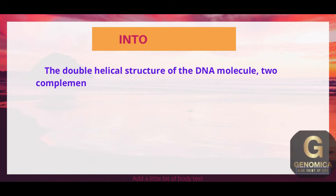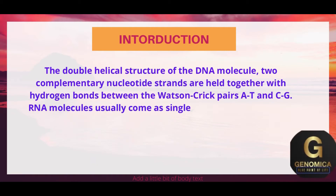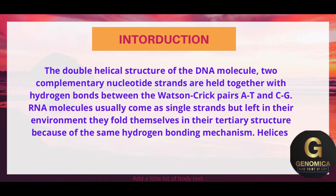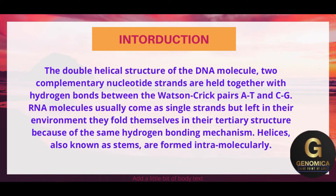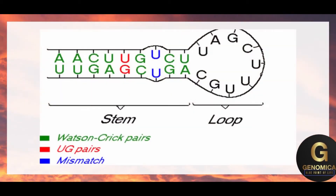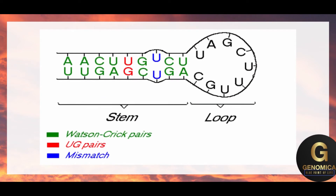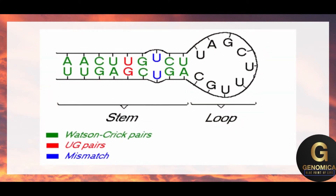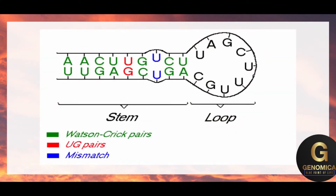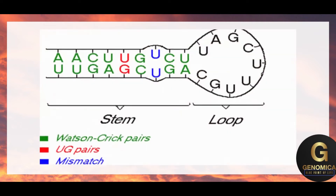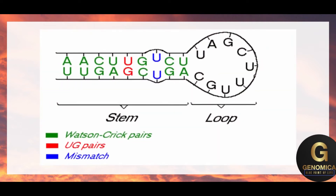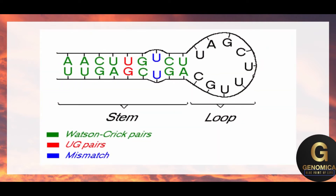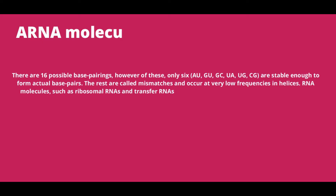Helices, also known as stems, are formed intermolecularly. This is one example of a folded RNA. The green indicates Watson-Crick pairs, the red shows U-G pairs, and the blue indicates mismatches. While folding, it may produce stems and loops as shown.